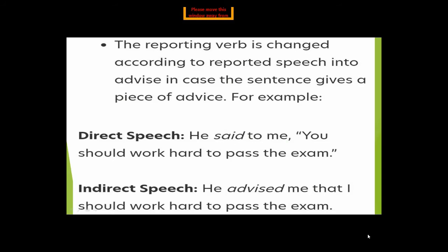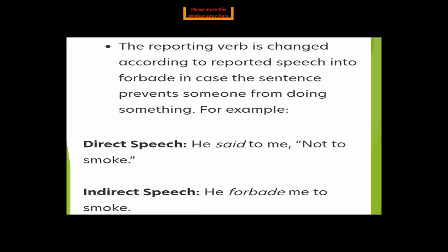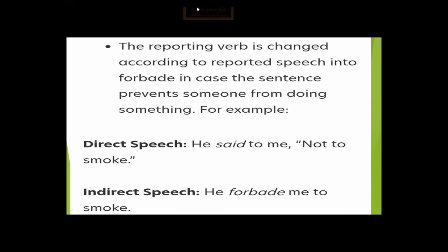If the sentence prevents someone from doing something, 'said' is replaced with 'forbade.' For example, 'He said to me, not to smoke' or 'don't smoke' becomes 'He forbade me to smoke.' The word 'forbade' means to stop someone from doing something — it has the sense of 'no' or 'not' in it, so we skip the word 'not' from the reported speech.